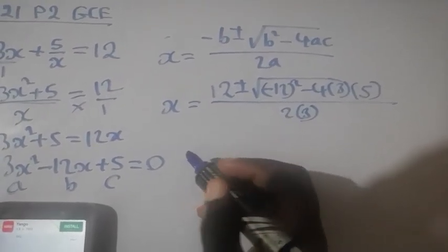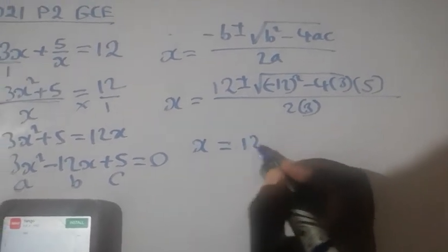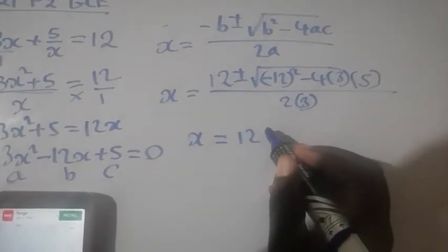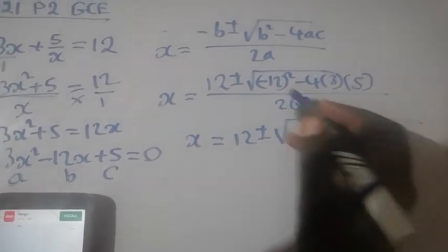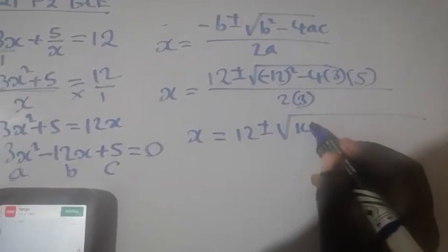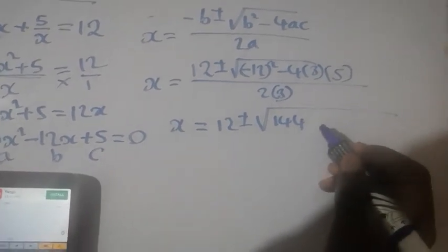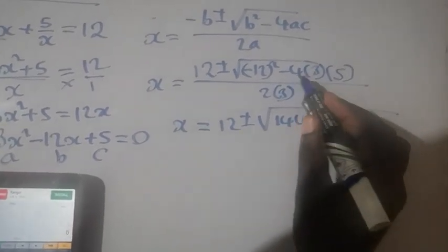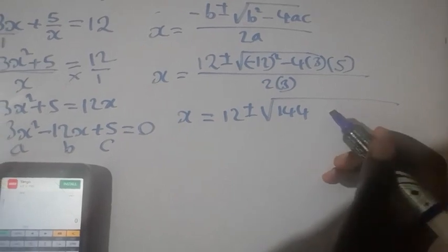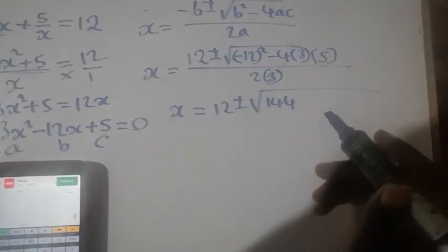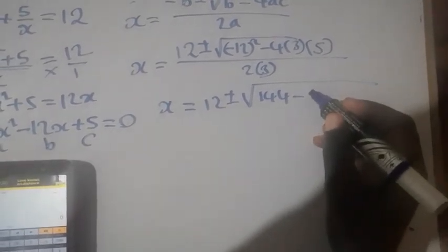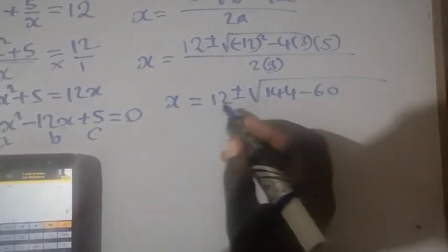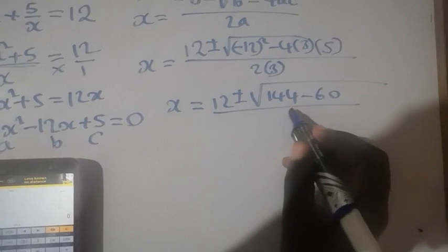So to continue with this question, we are going to have x equal to positive 12 plus or minus, 12 squared is 144, then negative 4 times 3 is negative 12, then negative 12 times 5 is negative 60, over 6.